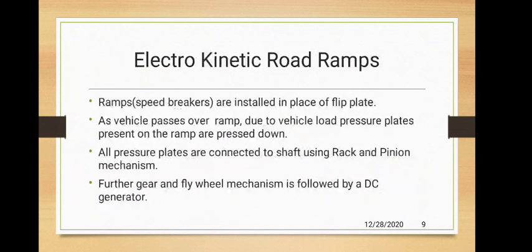The second method is known as electro-kinetic road ramps, which are similar to flip plates but installed as ramps or speed breakers. As vehicles pass over the ramp due to vehicle load pressure, plates on the ramps are pressed down. All pressure plates are connected to a shaft using a rack and pinion mechanism, which converts the linear motion of the pressure plate into angular motion and rotates the shaft. The shaft is connected to a gearbox, further connected to a flywheel and DC alternator. This DC alternator converts the rotational energy to electrical energy, producing electricity.